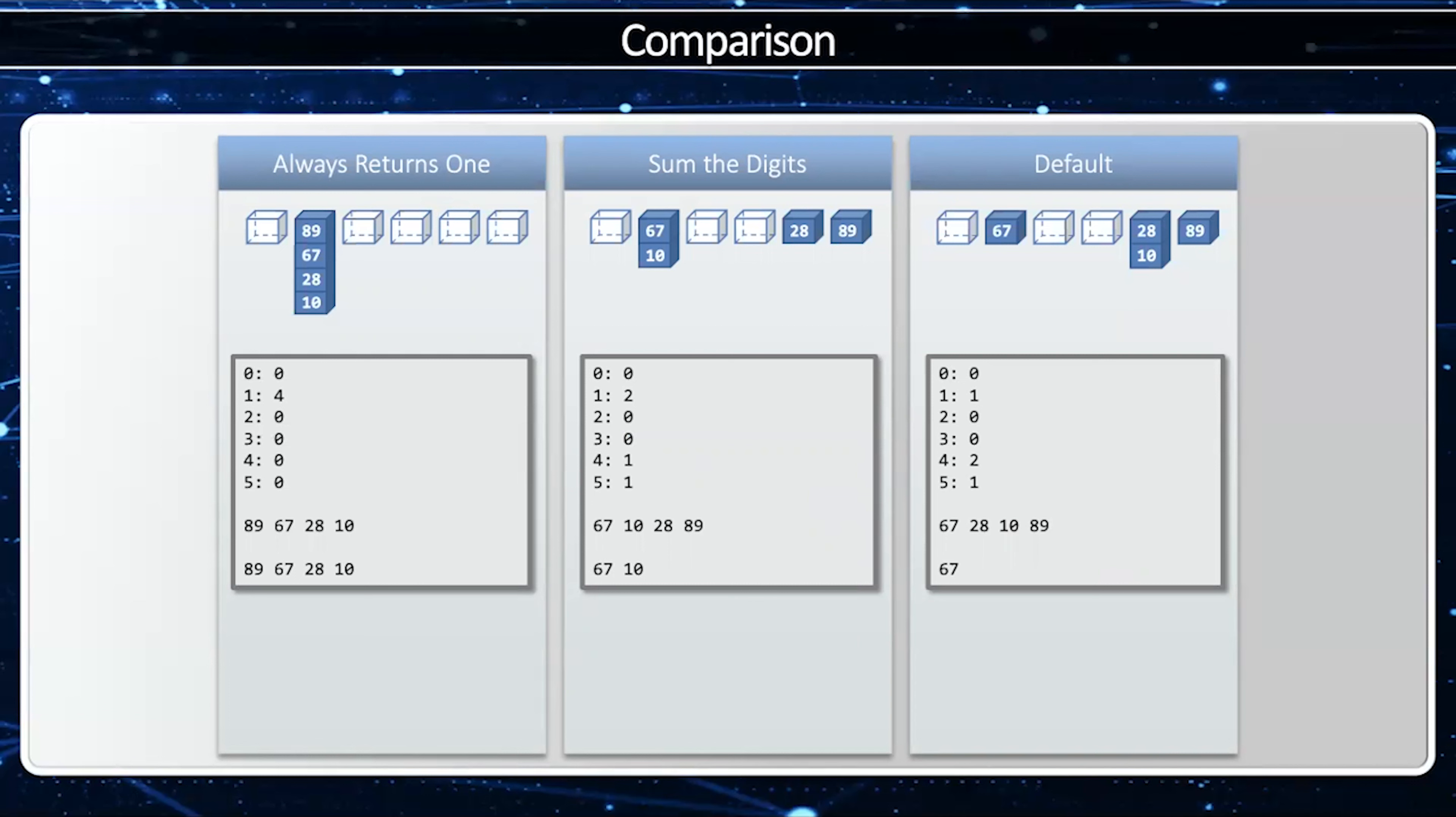And then finally when I use my default hash function bucket 1 only has one element which is good but bucket 4 has a collision. So I have different values.